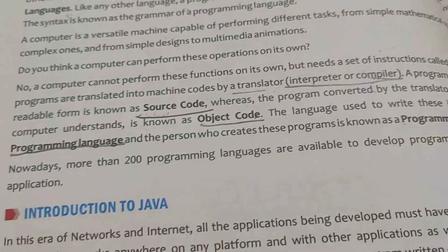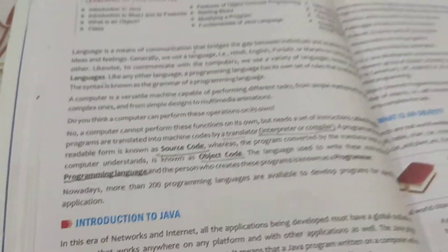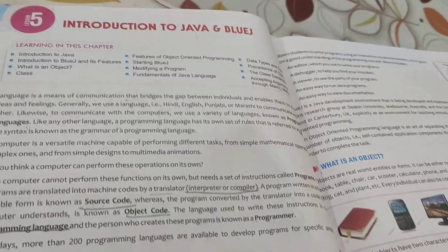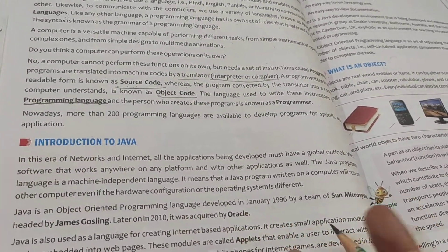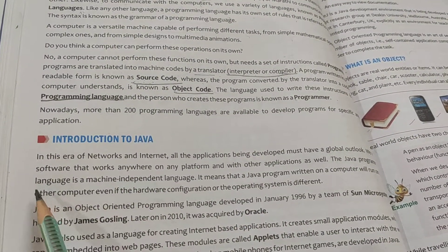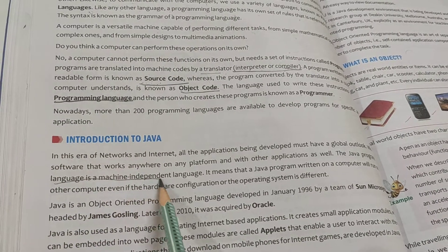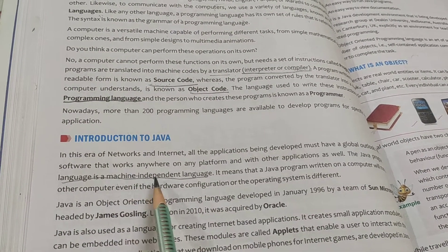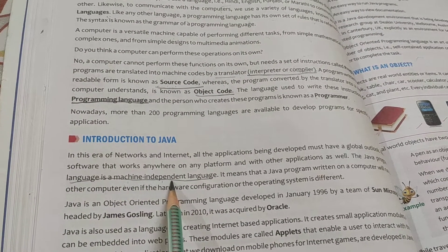Okay dear students, the next topic is introduction to Java. What is Java? Java is a machine independent language — machine independent, which is not dependent on the machine.